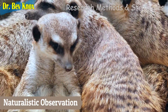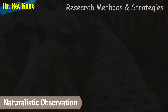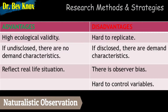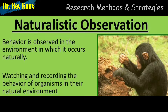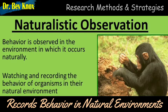Although the advantage of naturalistic observation is obvious — we get a sample of what people do in their natural habitat — there is also an important drawback: the inability to control any of the factors of interest. Naturalistic observation is a research method that records behavior in natural environments.